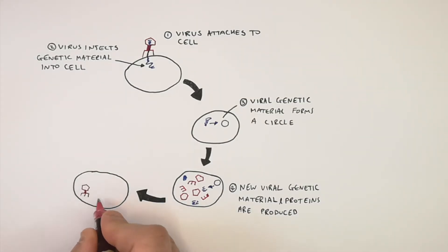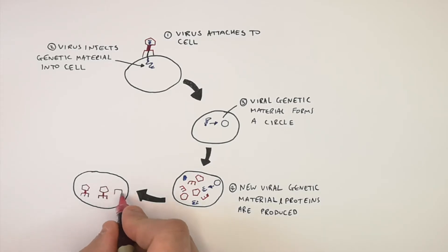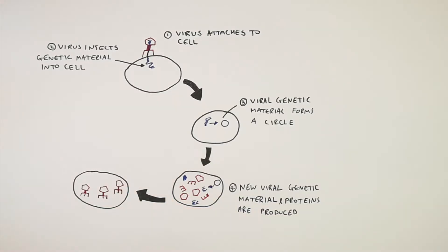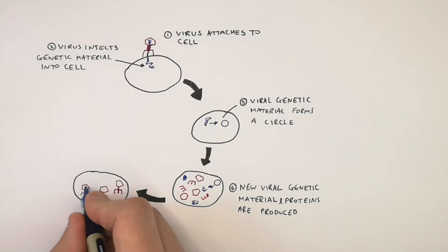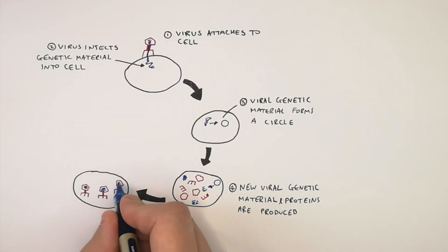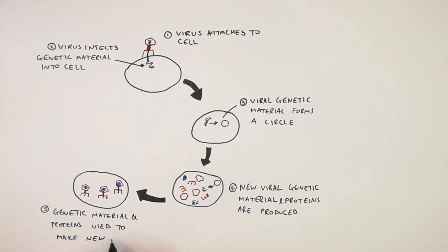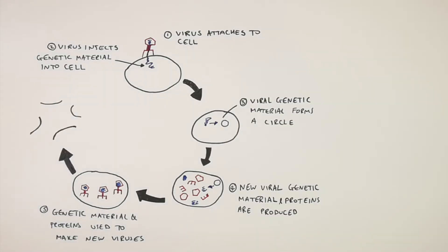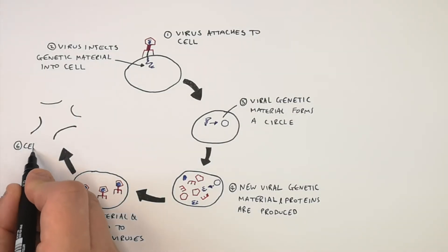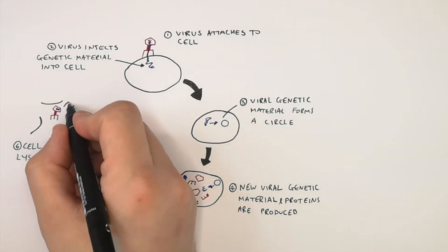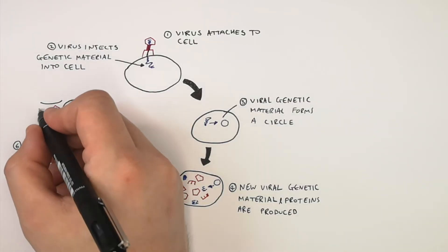The new viral genetic material and proteins that are produced are then assembled to form new viruses inside the cell. As you can see here, new viruses are being assembled from the genetic material and proteins that were produced previously, making new viruses inside the cell.